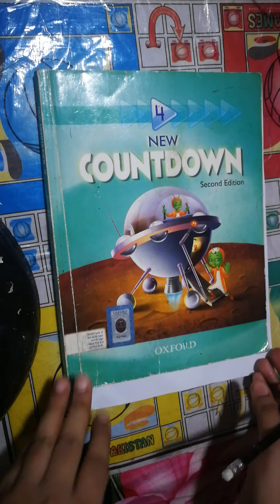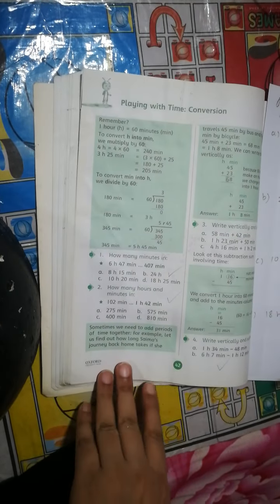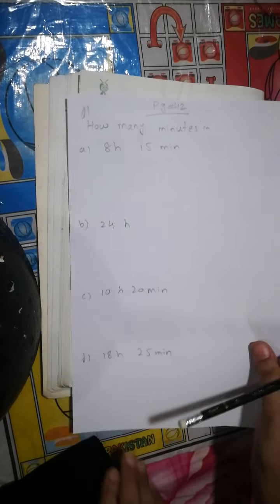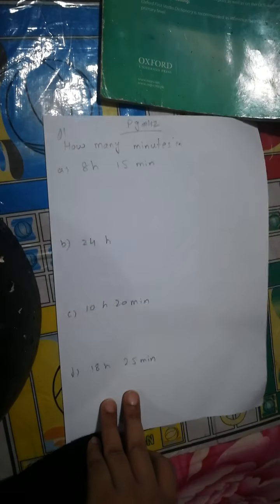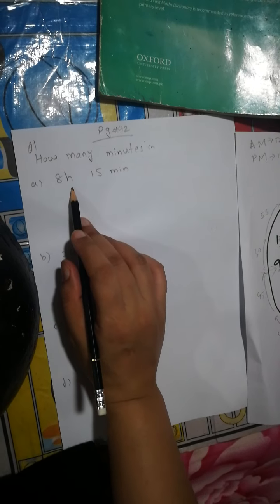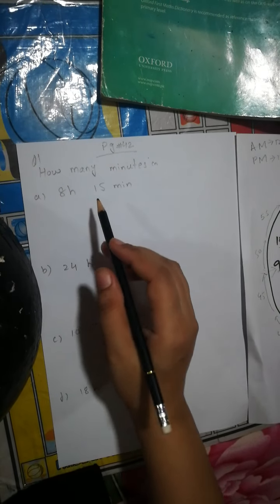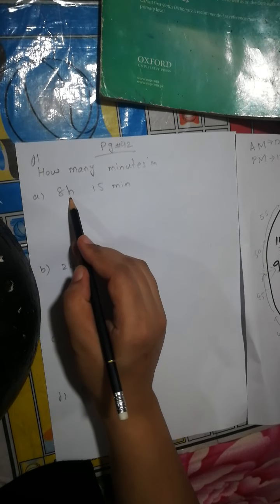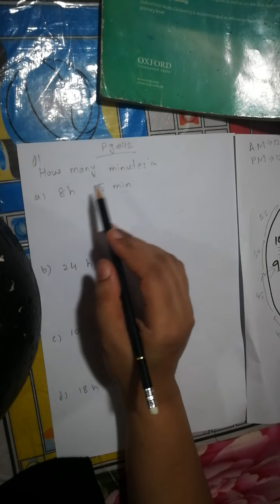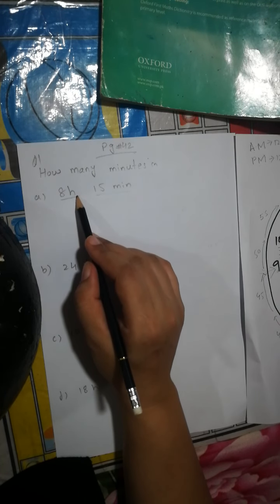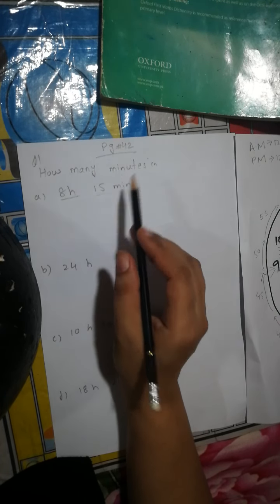Bismillahirrahmanirrahim, Assalamu Alaikum. Grade 4, page number 42, question number 1: how many minutes? They give us some time — we have to tell them the time in minutes. We know that in one hour you have 60 minutes. Some values are already in minutes and some need to be changed into minutes.